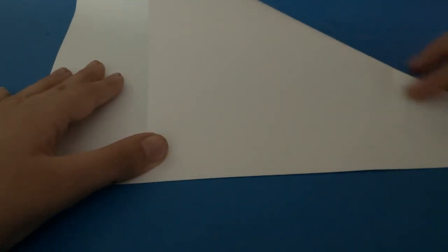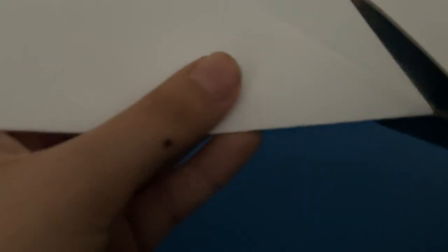All right, so first you're going to fold the paper like this. It doesn't have to be folded perfectly, but I'm just going to do it so it looks nice. And then you're going to cut it out, kind of like how you start a fortune teller or a jumping frog.